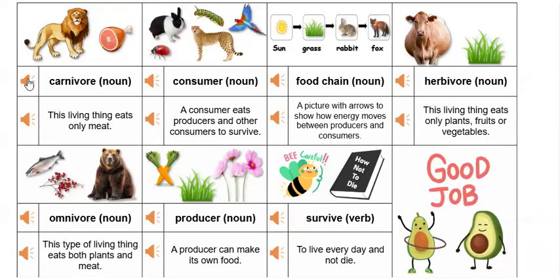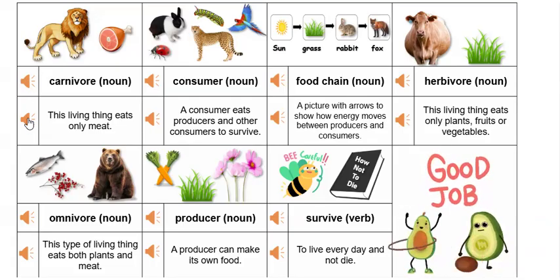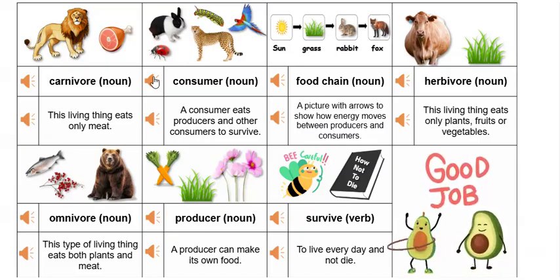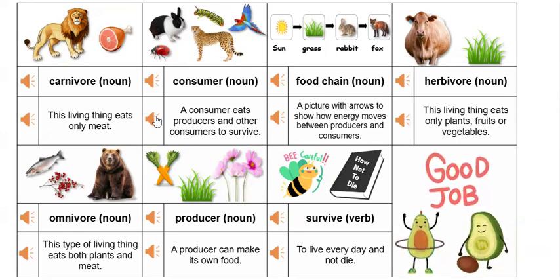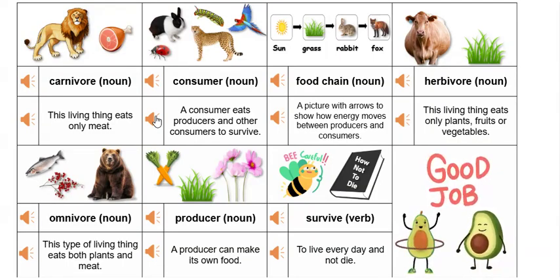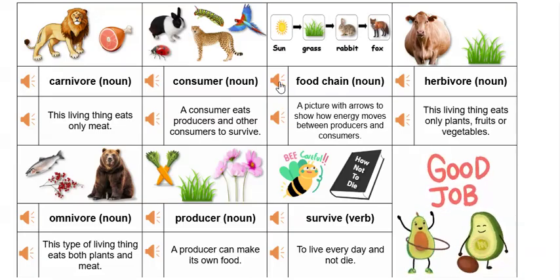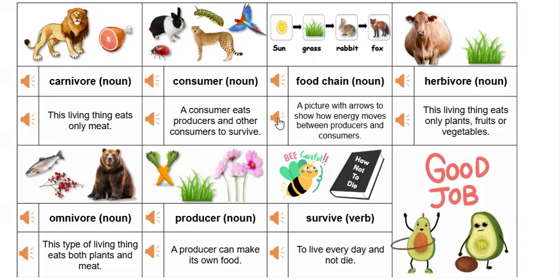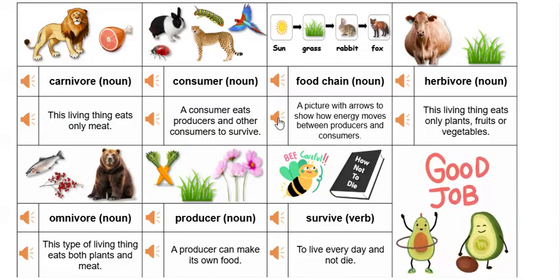Carnivore: this living thing eats only meat. Consumer: a consumer eats producers and other consumers to survive. Food chain: a picture with arrows to show how energy moves between producers and consumers.